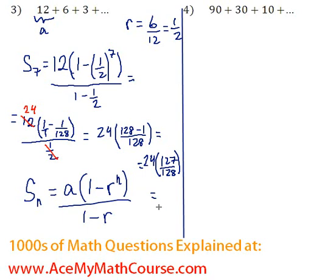So now let's just do this operation. 24 times 127 all over 128 will simplify to 381 over 16. In other words, in decimals, we would have 23.8125. And that's it. That is the sum of the first 7 terms.